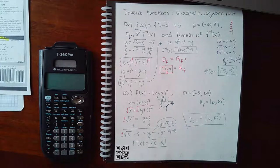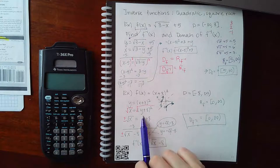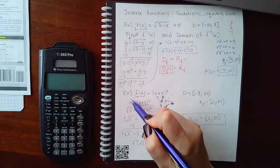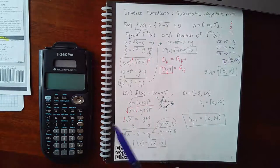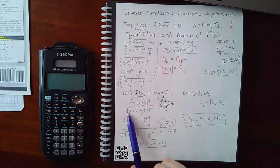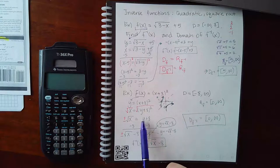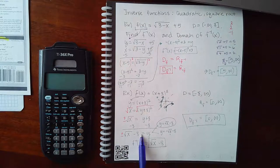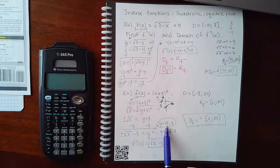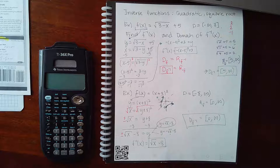Squares are more complicated to handle. Following the rules — change f(x) to y, interchange variables, solve for y — to get rid of the square I take the square root of both sides, giving plus or minus the square root of x. The square and square root cancel, leaving the radicand y plus 8. Subtracting 8 from both sides gives y equals plus or minus the square root of x minus 8, meaning I actually have two possible functions.